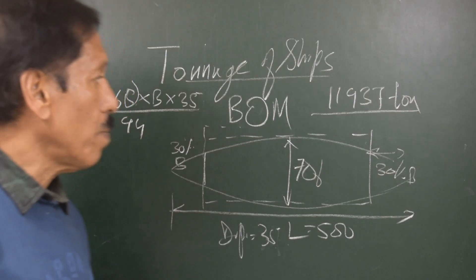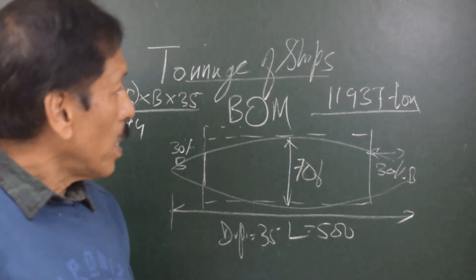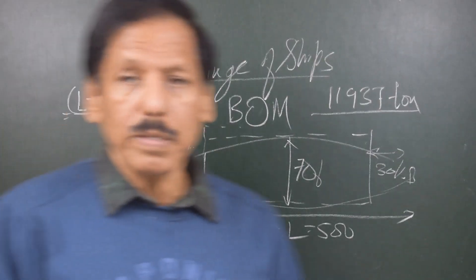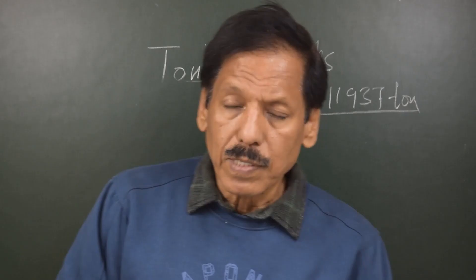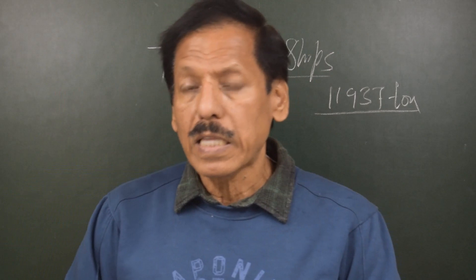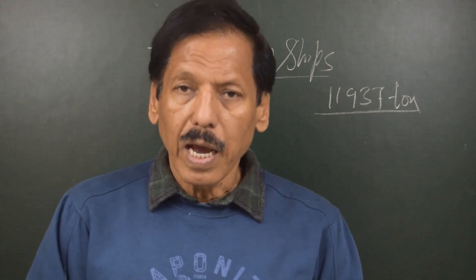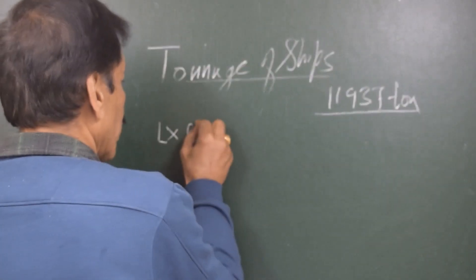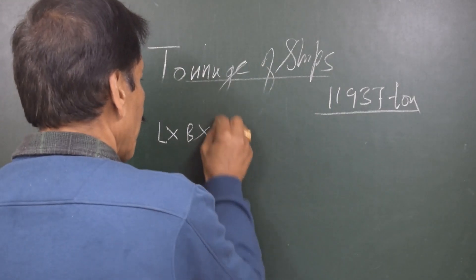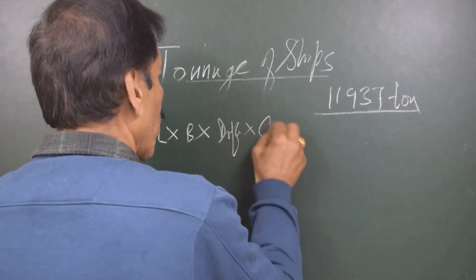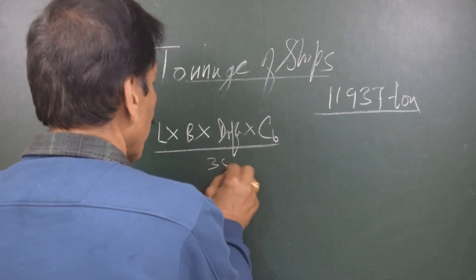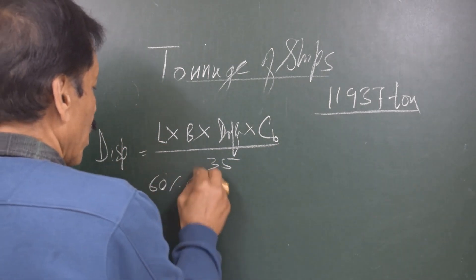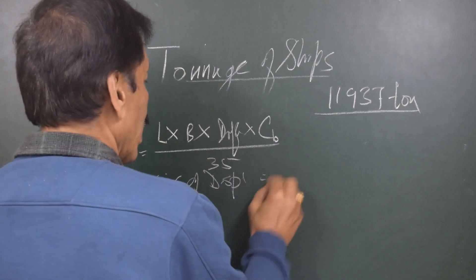So this was a term associated with this ship. Like around the same time, there was another method of calculation that used to be called Thames Shipbuilder Measurement method. And by this method, the displacement used to be found like this: length into length into breadth into draft into block coefficient divided by 35 used to be displacement, and 60% of displacement is equal to deadweight.